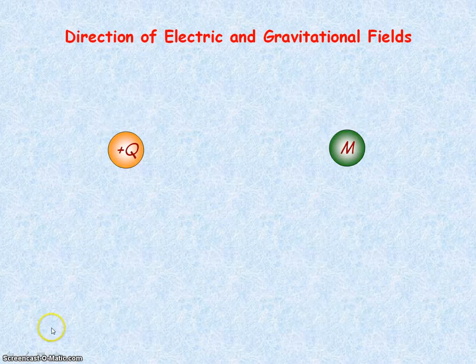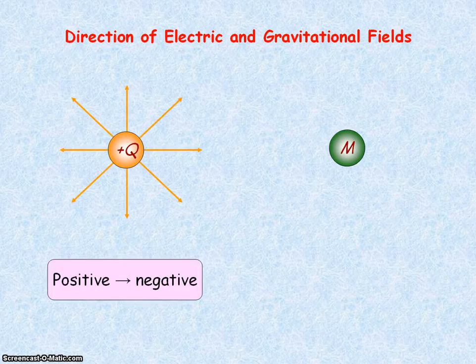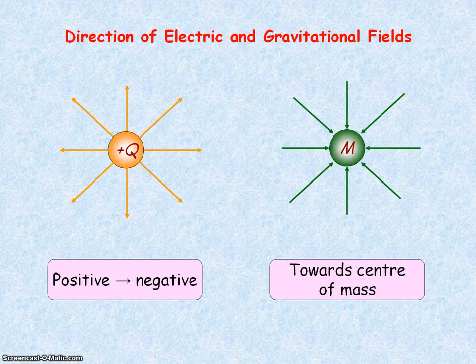The direction of an electric field is the direction in which a positive charge will move, so that is away from positive and towards the negative. The direction for a gravitational field is always towards the centre of mass.